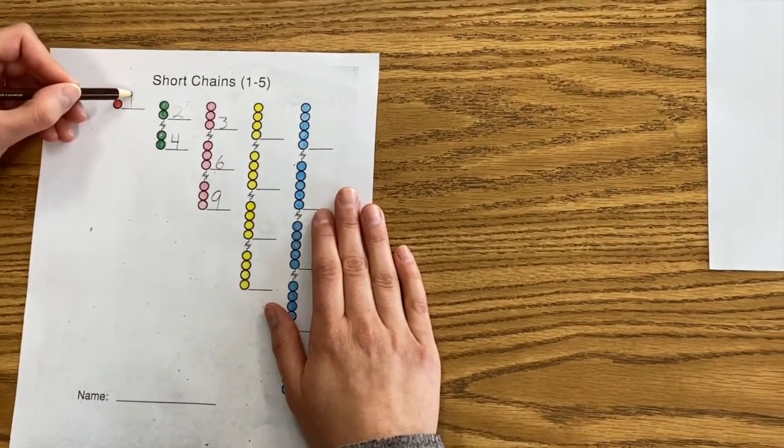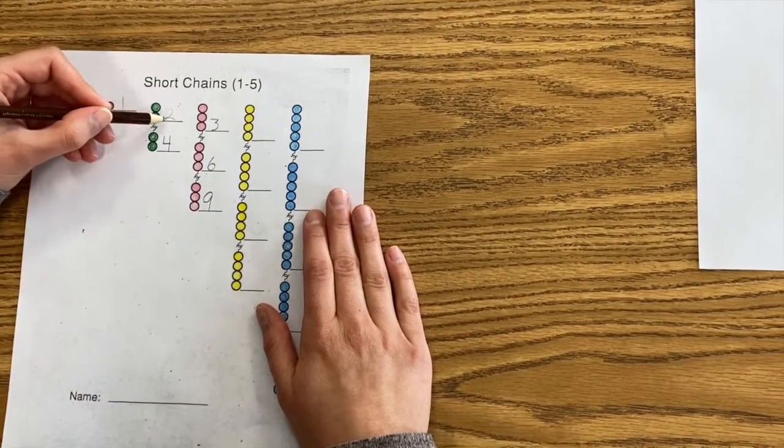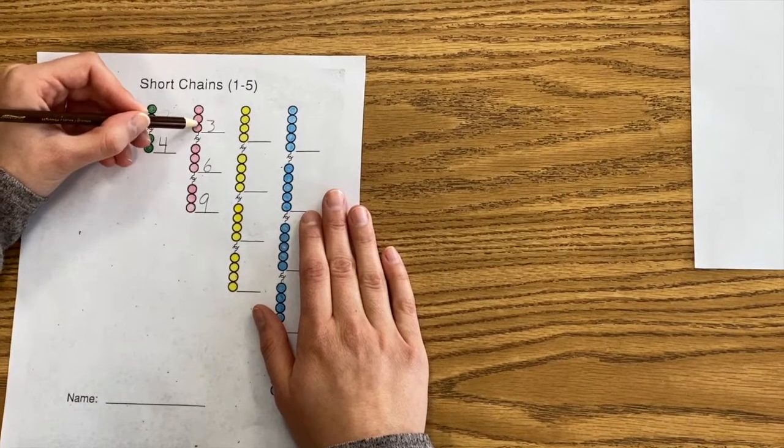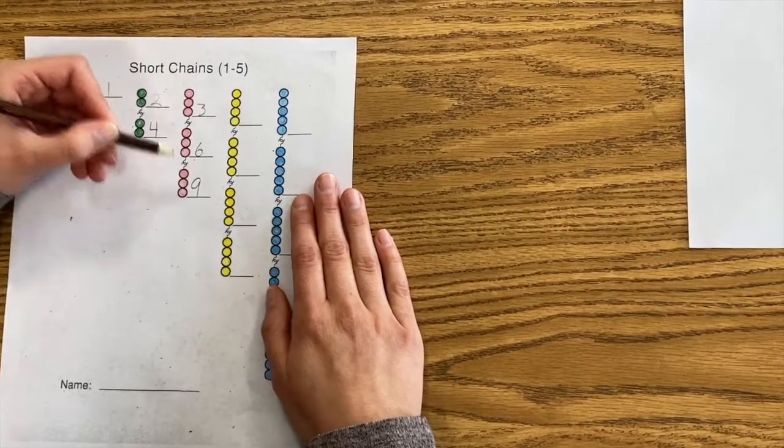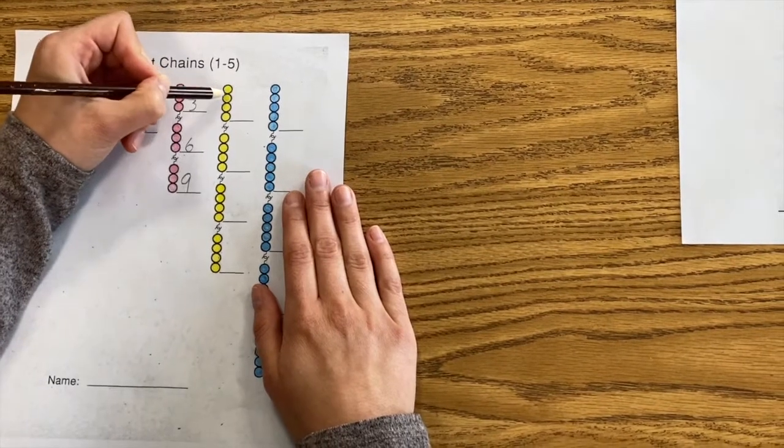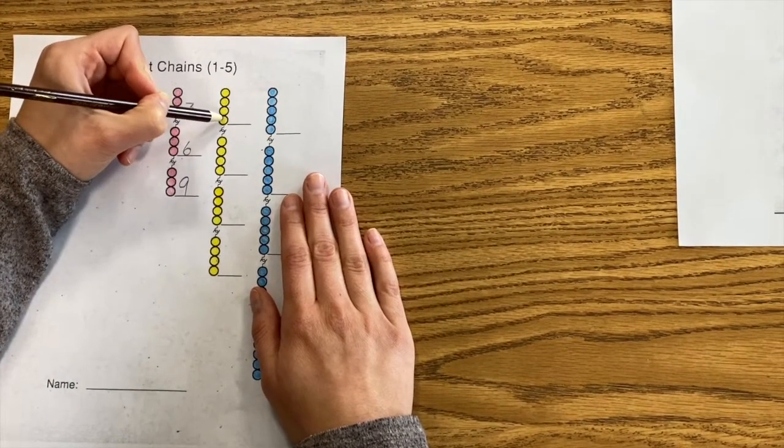I have the ones, the twos, and the threes. One, two, three, four. Four.